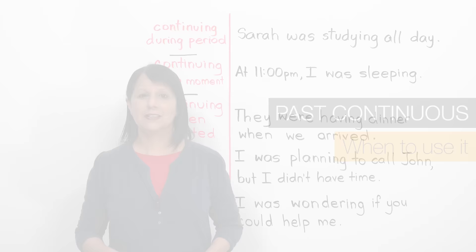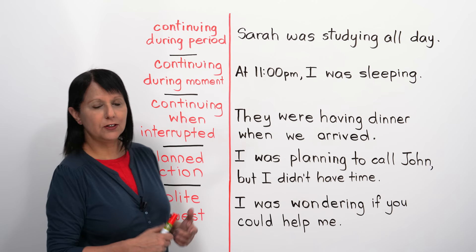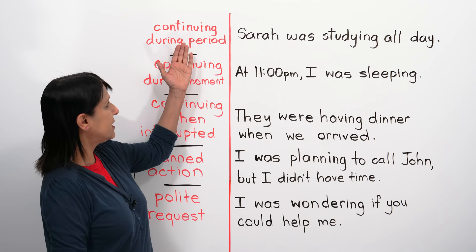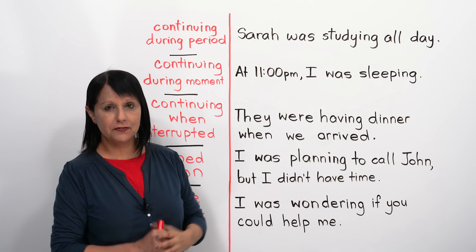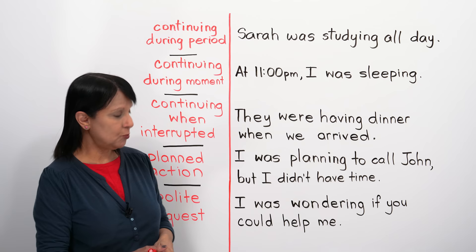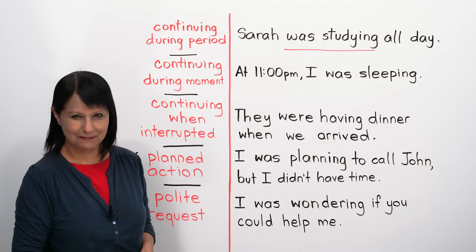Now let's look at when we can use the past continuous tense. We can use it to talk about an action that was continuing during a period of time. For example: 'Sarah was studying all day.' The period of time here is 'all day,' and the past continuous is 'was studying.'